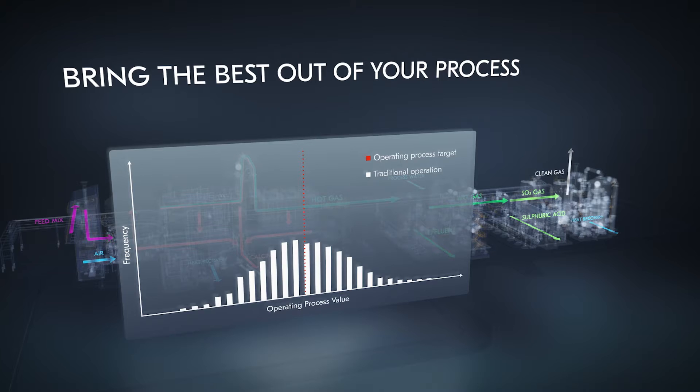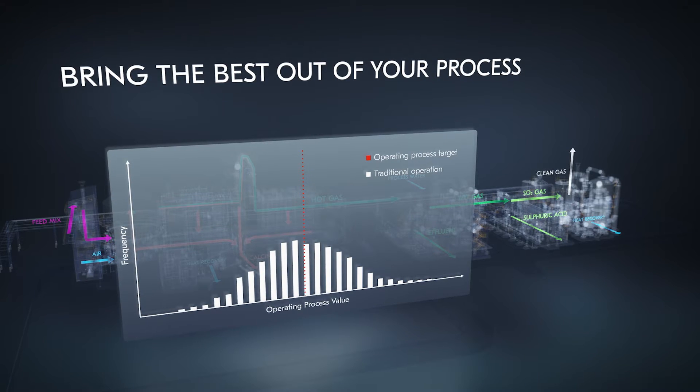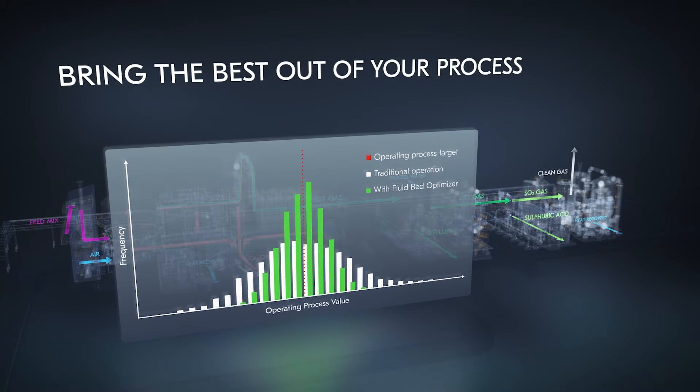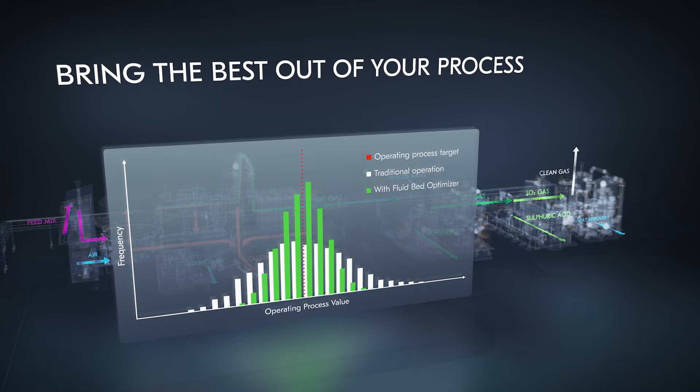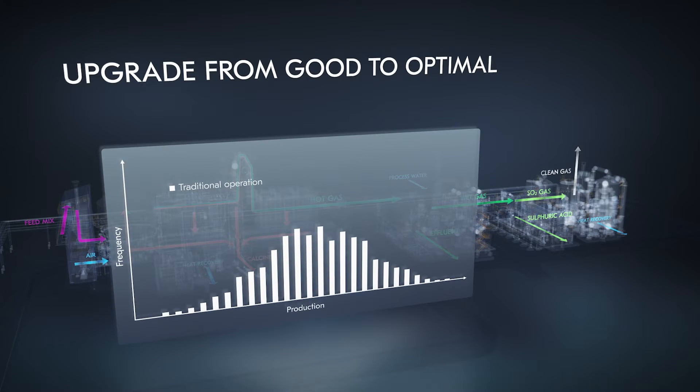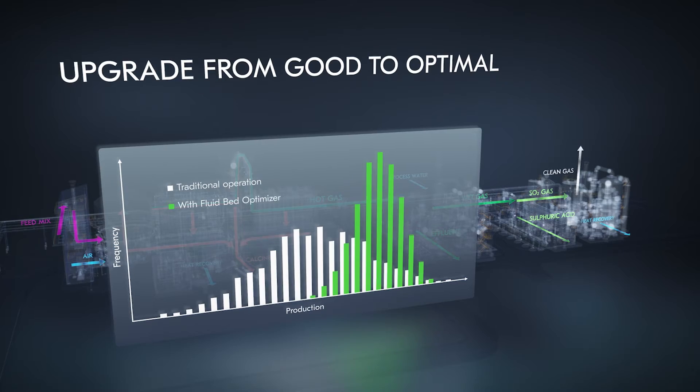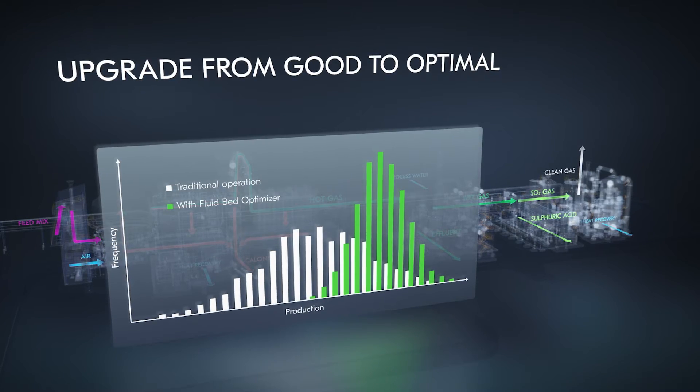An added benefit of a stabilized and optimized production process is increased plant availability due to reduced process fluctuations, which in turn enables an increase in optimized annual production levels, and further increases your plant's profitability.